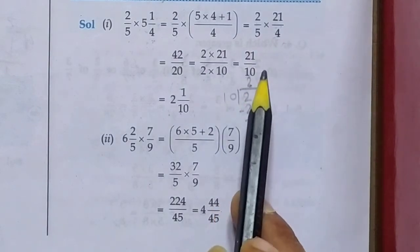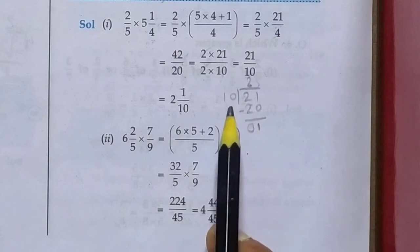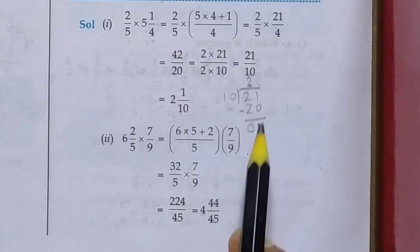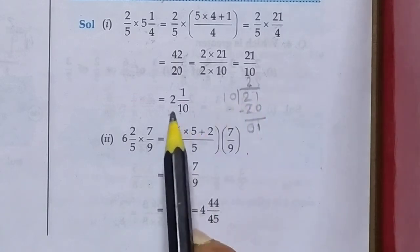Now 21 upon 10 is an improper fraction. Convert it into mixed form. 21 divided by 10: 10 times 2 is 20, 21 minus 20, remainder 1. So first of all in the quotient, 2 is there. Write 2 as the whole number, remainder 1 in numerator, and 10 as it is in denominator.